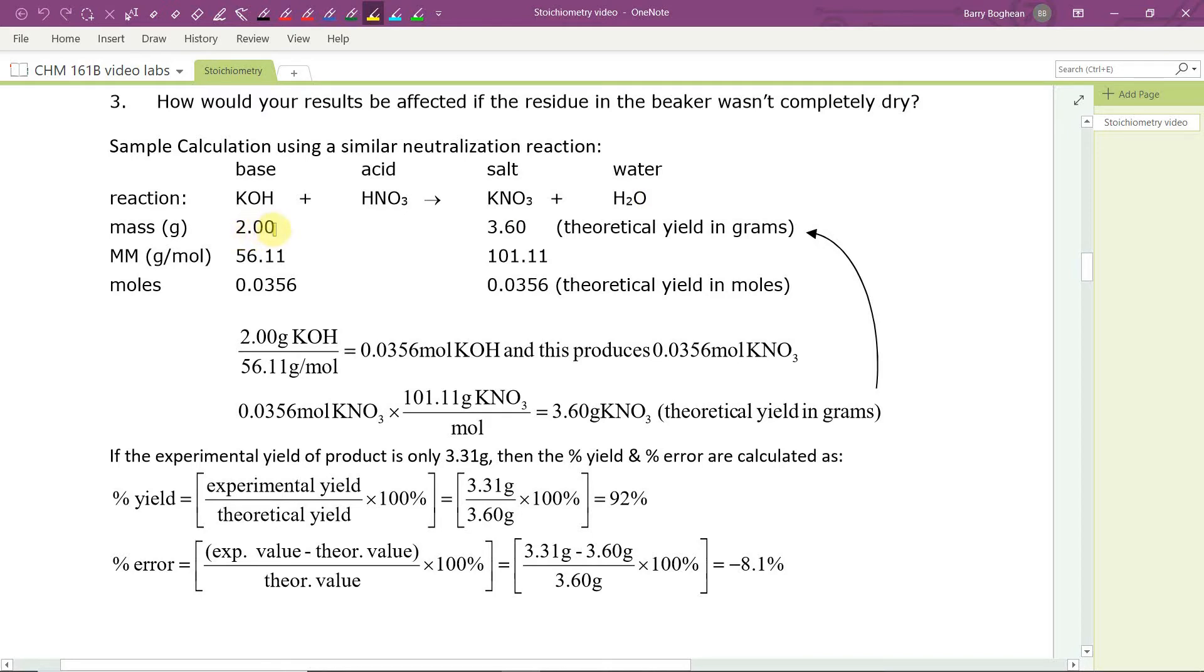In this example, we're adding 2.00 grams of potassium hydroxide. Divide it by the molar mass, 56.11 grams per mole, which gives us 0.0356 moles of KOH.